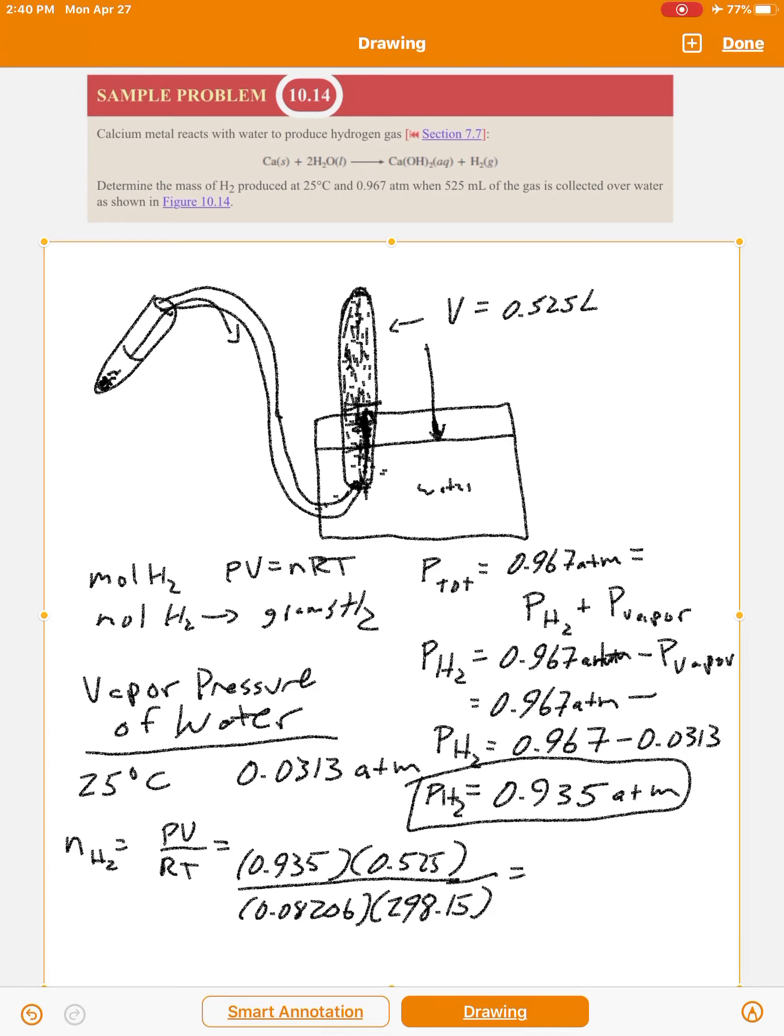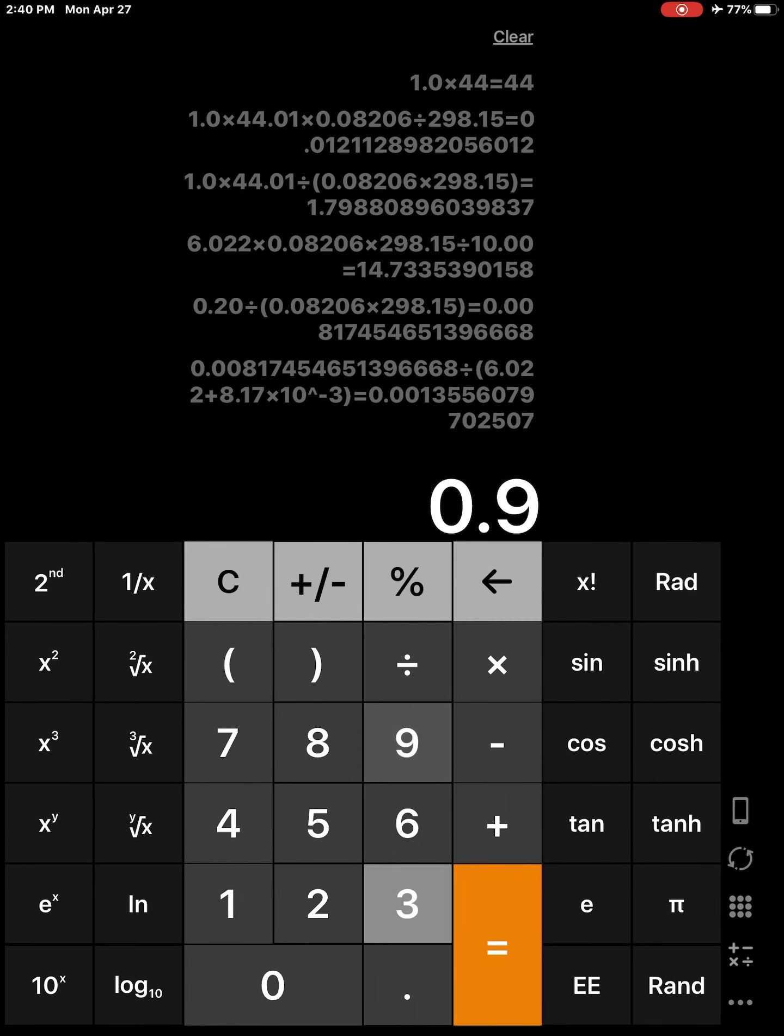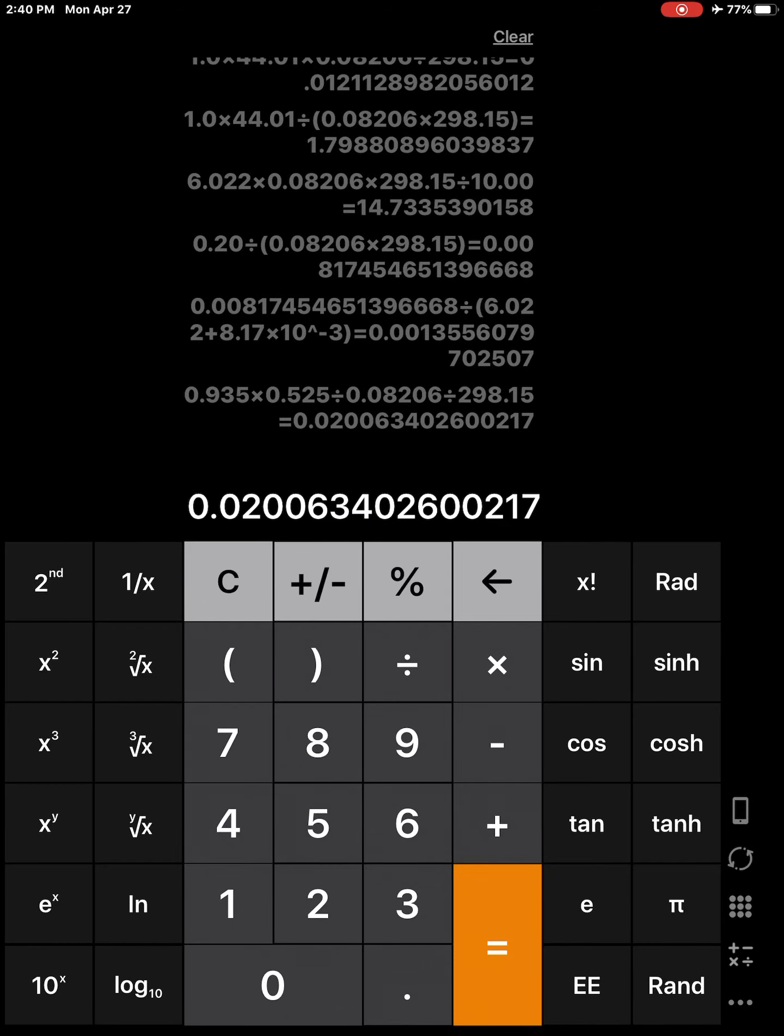And that will give you the moles of H2. So 935, 525, divided by 0.08206, divided by 298.15. So it looks like it's 0.0201. So 2.01 times 10 to the minus 2.